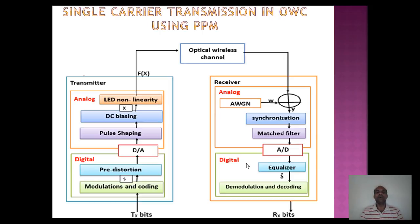In PPM (pulse position modulation), log₂(M) input bits form a time-domain symbol. In a sequence of M chips represented as a vector, one chip has a current level and the remaining M minus 1 chips are set to zero — that is, only one chip is set to 1 and all the remaining are set to 0.